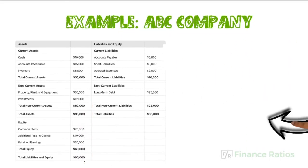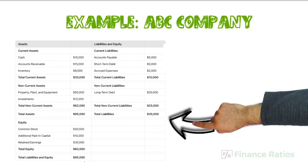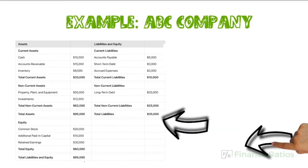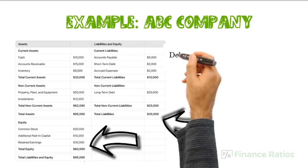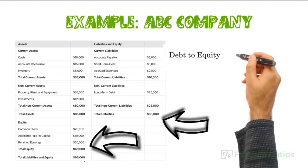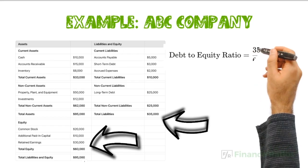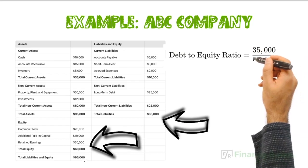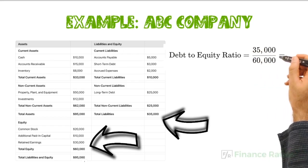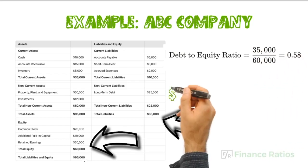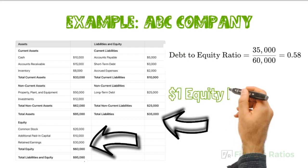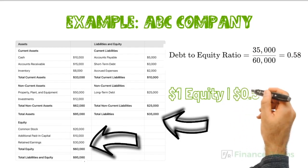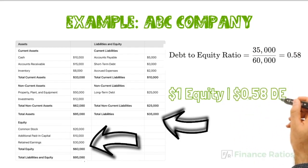Total liabilities are $35,000, total equity is $60,000, and debt to equity is 35,000 divided by 60,000, which equals 0.58. This means that for every dollar of equity, the company has 58 cents of debt.